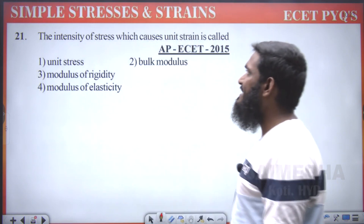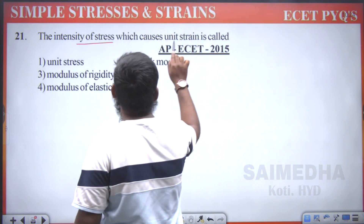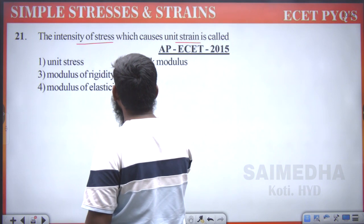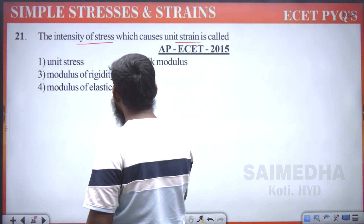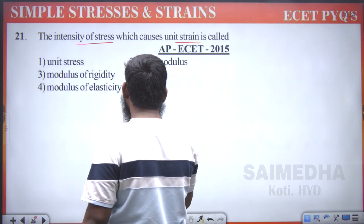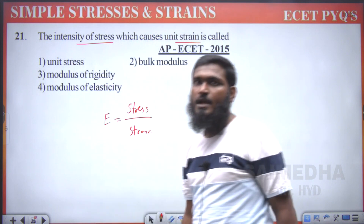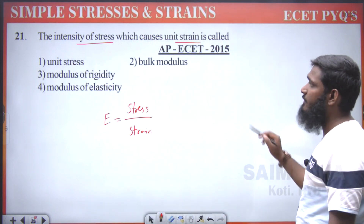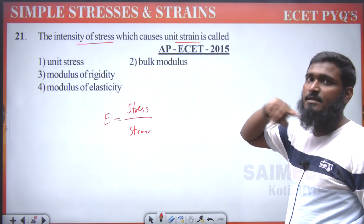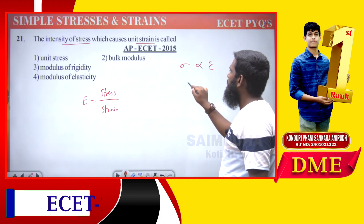Next: the intensity of stress which causes unit strain. We are having stress divided by strain concept here. Stress by strain means it equals modulus of elasticity. According to Hooke's law, stress is directly proportional to strain.